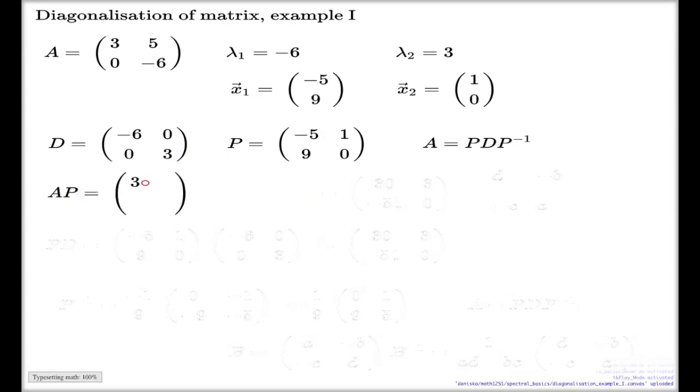If I compute AP, that's my A matrix from here. That's my P matrix from here. If I compute that, first row, first column, it's negative 15 plus 45, it's 30. First row, second column, it's 3. Last row and first column, it's negative 54. And last row and last column is 0. Here's the product of AP.